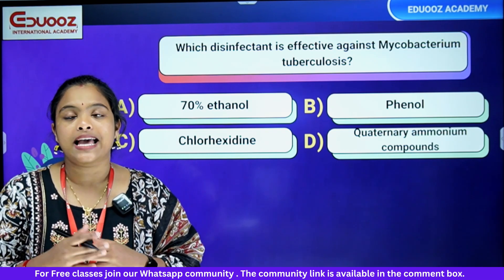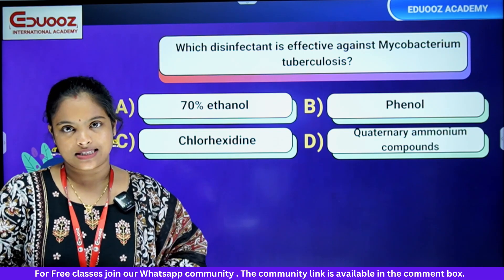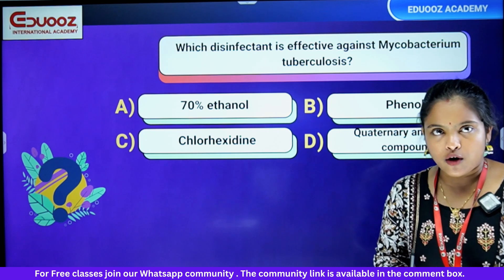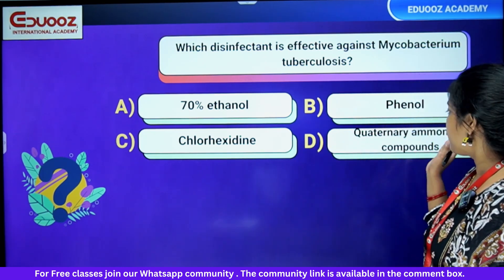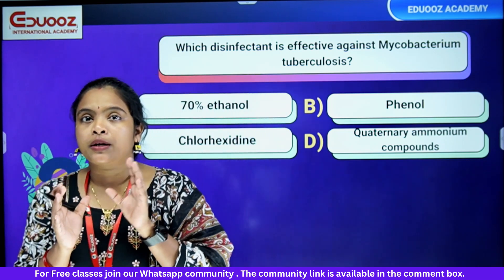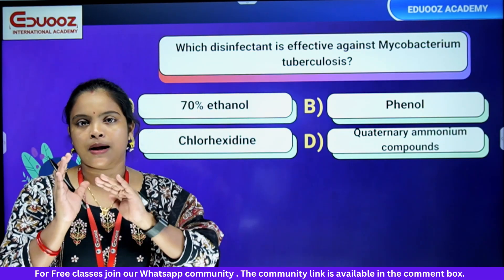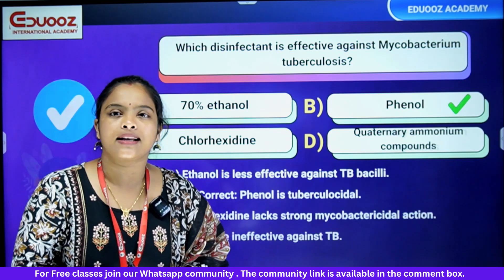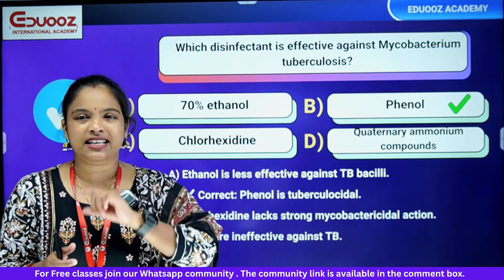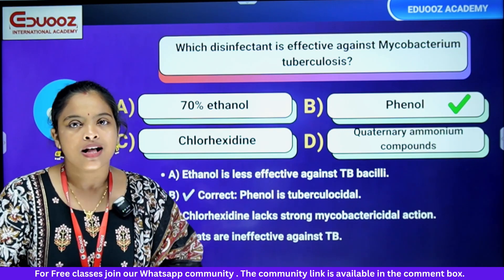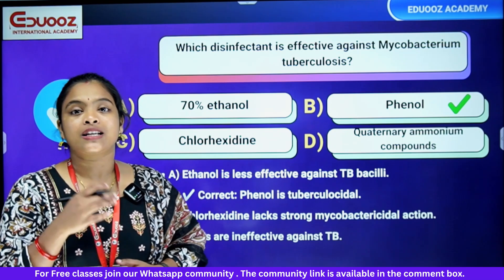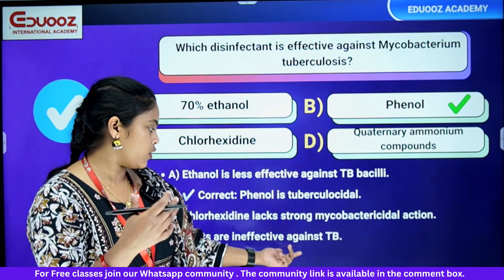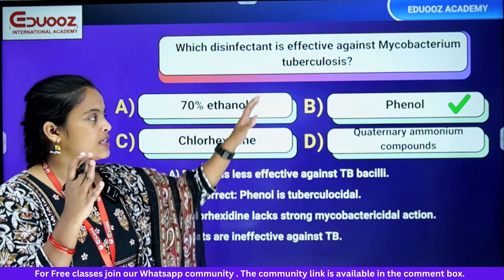Which disinfectant is effective against Mycobacterium tuberculosis? Options: 70% ethanol, phenol, chlorhexidine, quaternary ammonium compounds. Phenol is less effective, chlorhexidine lacks strong mycobacterial action, and quaternary ammonium compounds are also ineffective. The answer is phenol — it is the most effective among these options against TB bacillus.